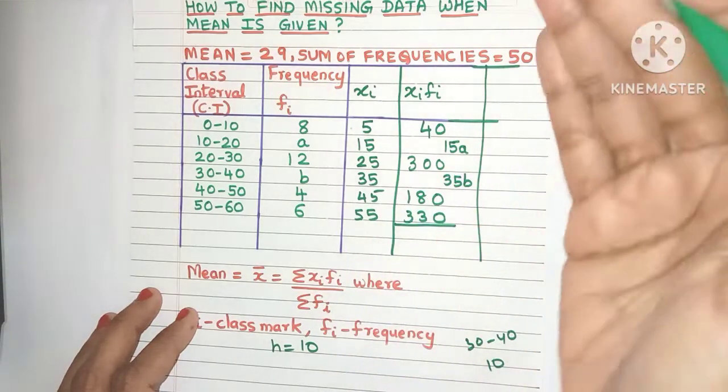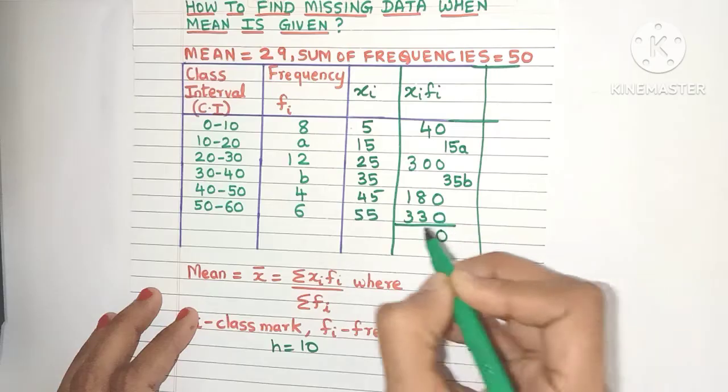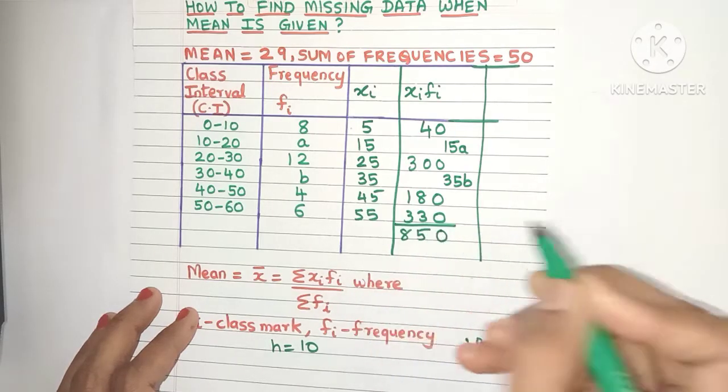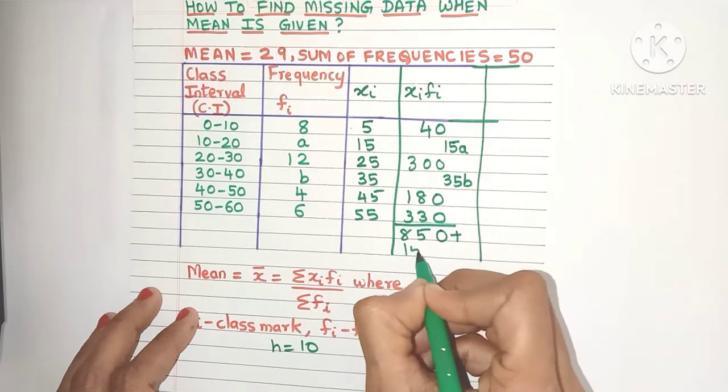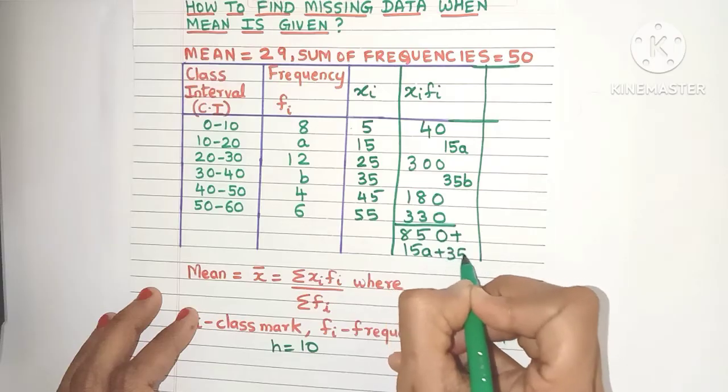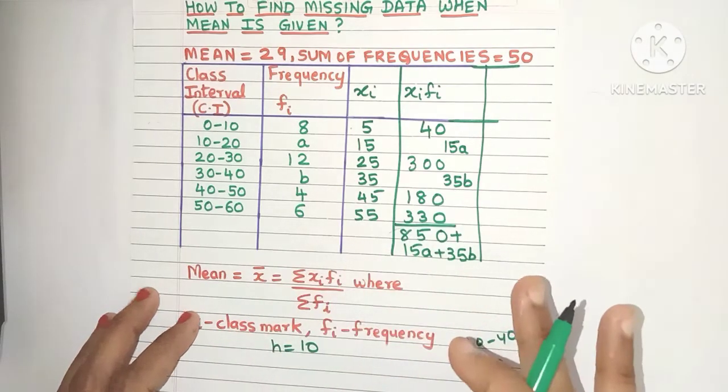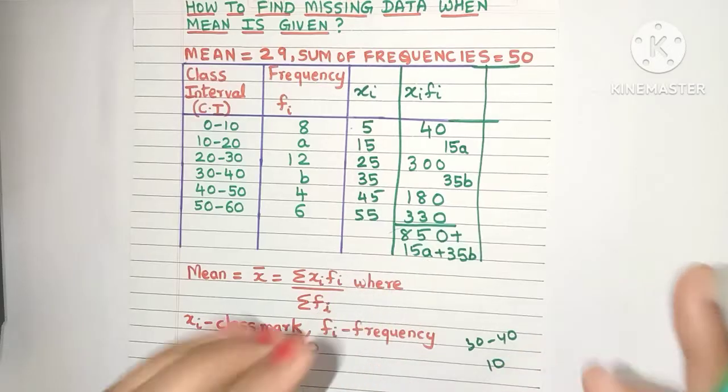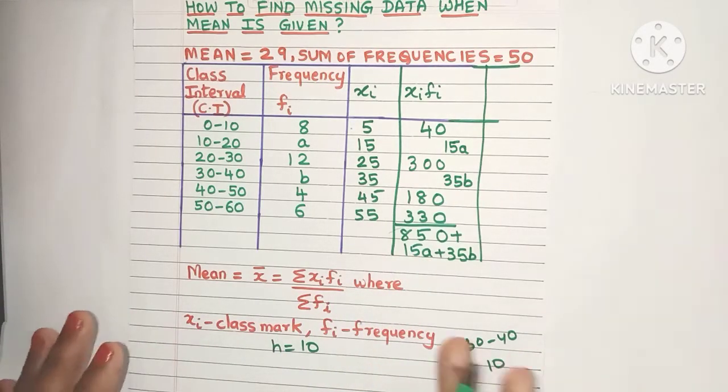First add the numbers. Here we'll get 850. Now add the variables, which is 15a and 35b. Remember, they are all unlike terms, so we can't simplify this further. Just leave it like that.